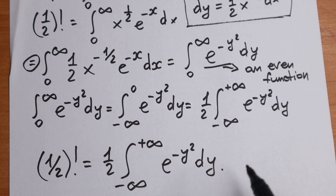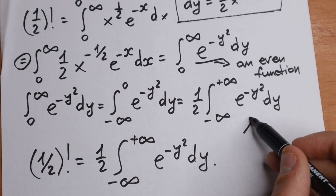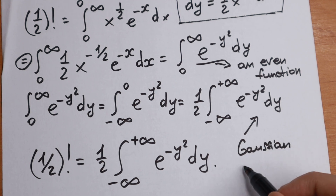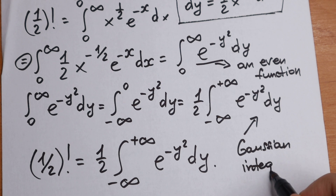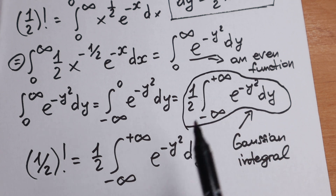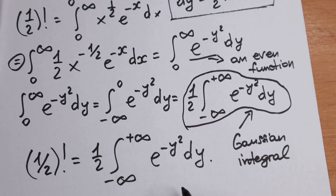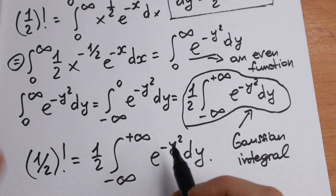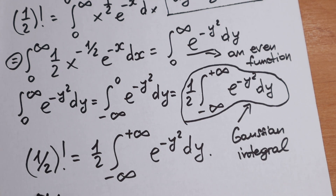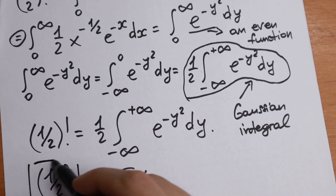This integral is known as the Gaussian integral. If we solve this integral, we find that one-half factorial equals the square root of pi over 2. This will be our answer.